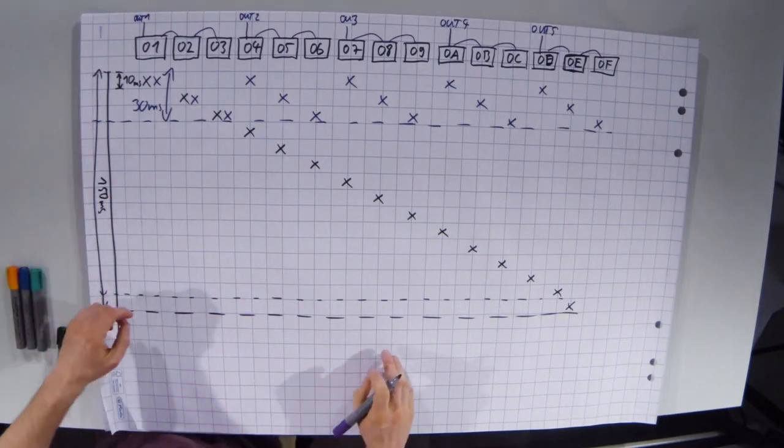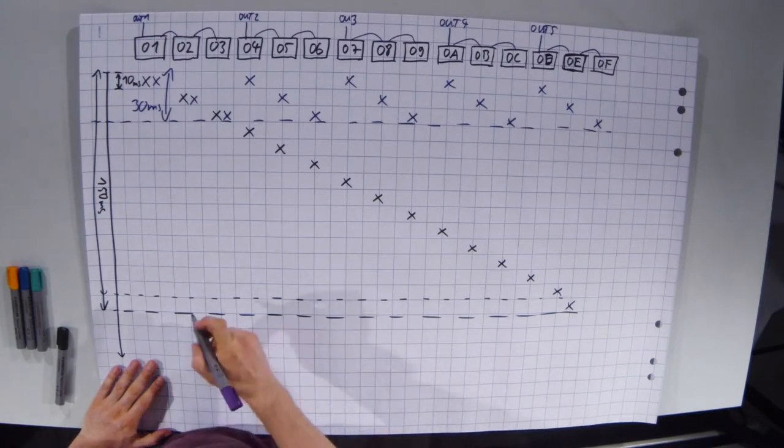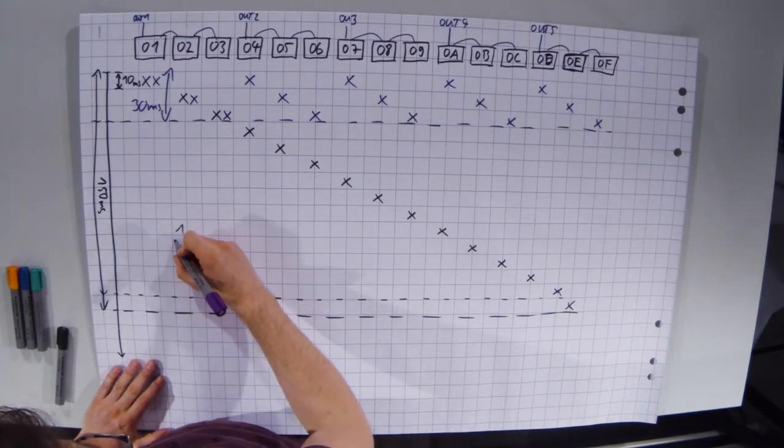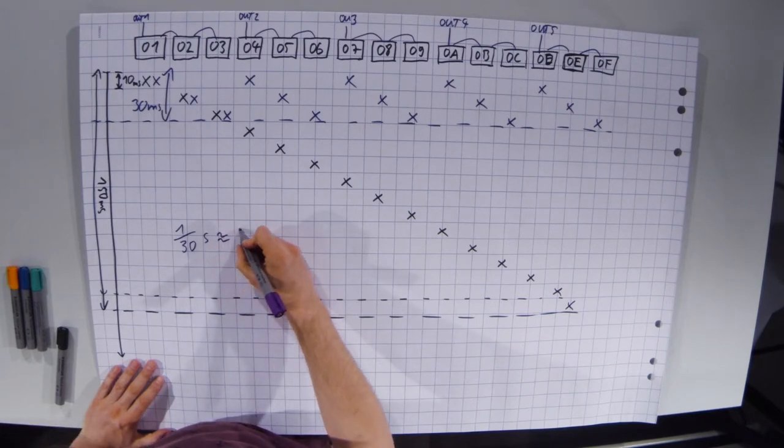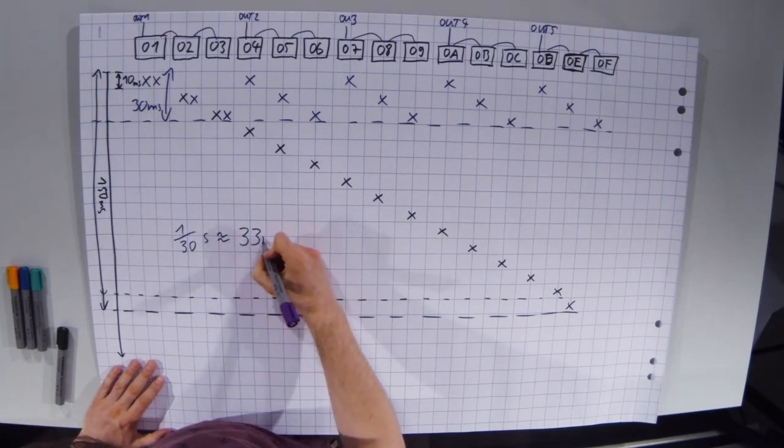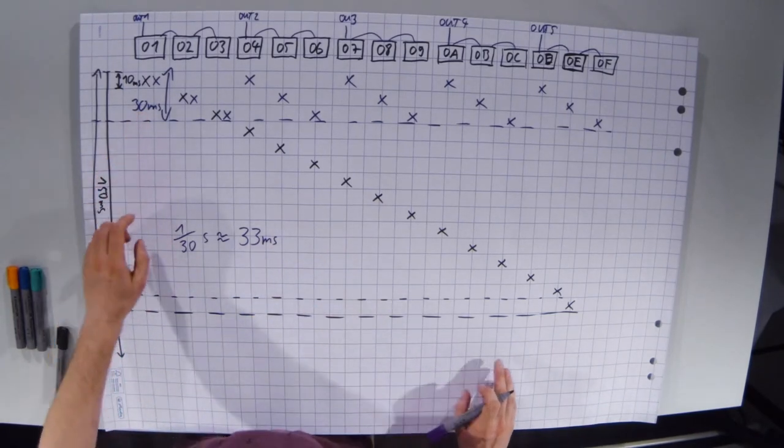So this is by a factor of five faster. And actually 30 milliseconds is not so much. One frame in PowerDigital is a third of a second, so roughly 33 milliseconds.